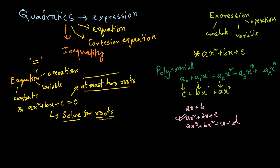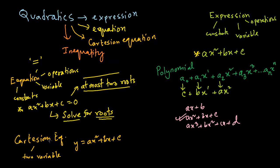Next, let's move on to the Cartesian equation. A Cartesian equation is not the same as a solving equation where you solve for unknown values of x. A Cartesian equation has two variables, usually in the format y equals ax squared plus bx plus c. It would have two variables: x and y. It is quadratic because the highest power of x is 2. You don't solve Cartesian equations — you draw pictures of them on the Cartesian coordinate system plane, or the Cartesian plane. The shape looks like a parabola.